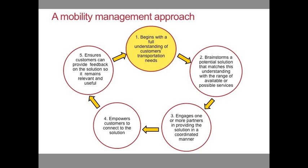First, mobility management begins with a full understanding of customer needs. Second, community groups brainstorm potential solutions that match these needs with the range of available or possible solutions. Third, the community group engages one or more partners in providing the solution in a coordinated manner. Fourth, the group empowers customers to connect to the solution. And fifth, the group ensures customers can provide feedback on the solution so it remains relevant and useful. Note that as presented here, mobility management begins and ends with the experience and input of the end user.